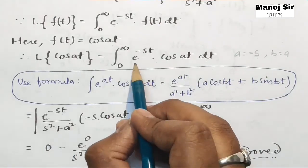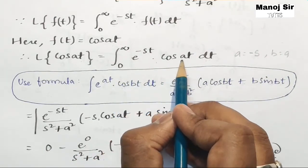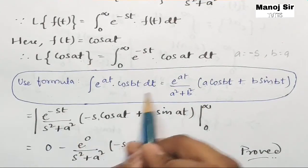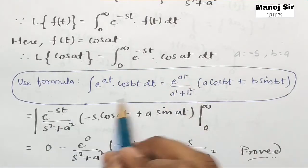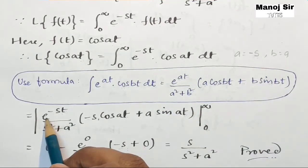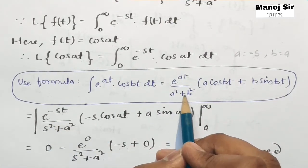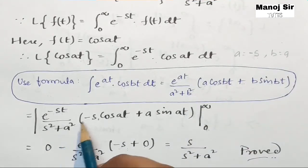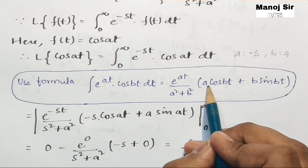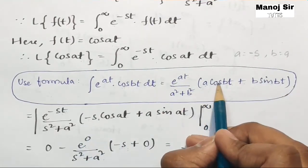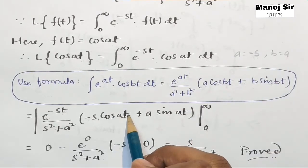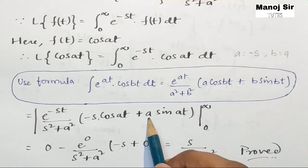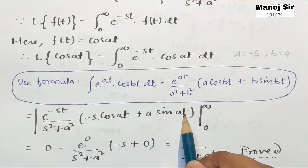So the integration of e^(−st) into cos(at) dt becomes: e^(−st) upon s² plus a² — because a is minus s so a² is s², and b² is a². Opening the bracket: a·cos(bt) becomes minus s·cos(at), and plus b·sin(bt) becomes plus a·sin(at).